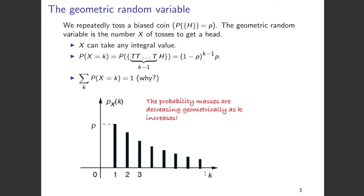Now it is very easy to understand that the summation of P(X = k) for all values of k is going to be 1. The reason is that k can take values all the way from 1 to infinity in the summation, and what we are looking at is just the probability that you're going to get a head somewhere, sometime. So if you add all that up you are going to get 1.